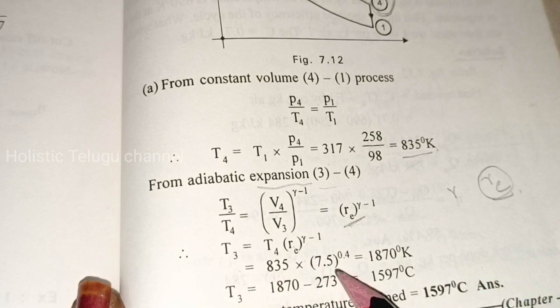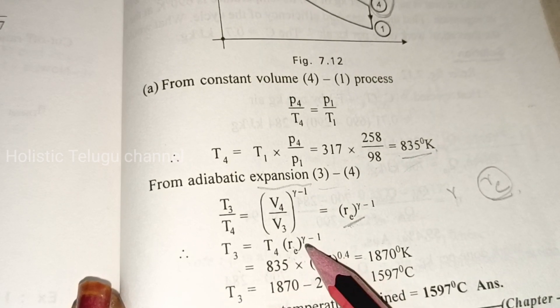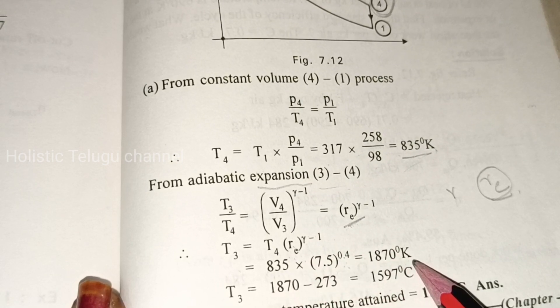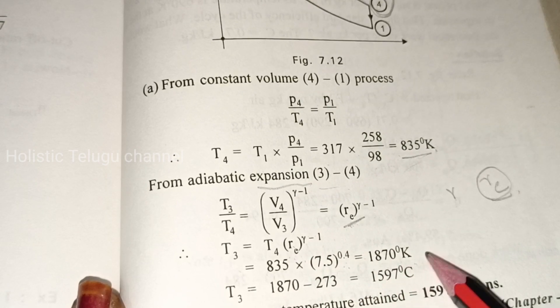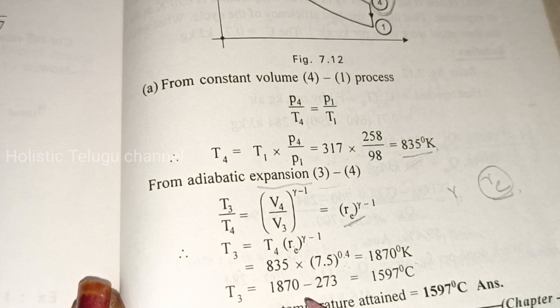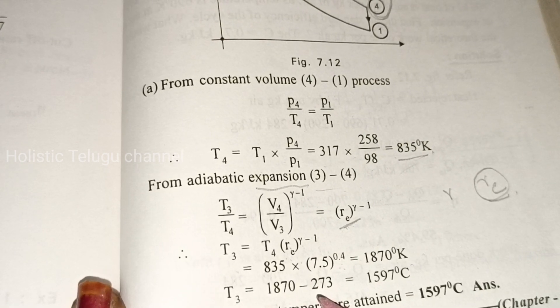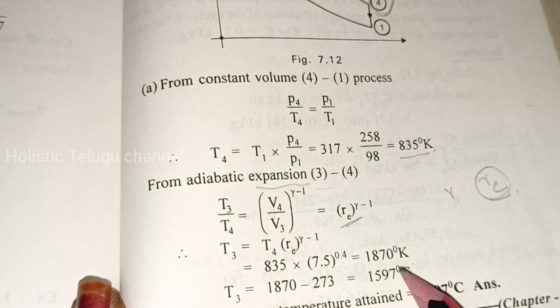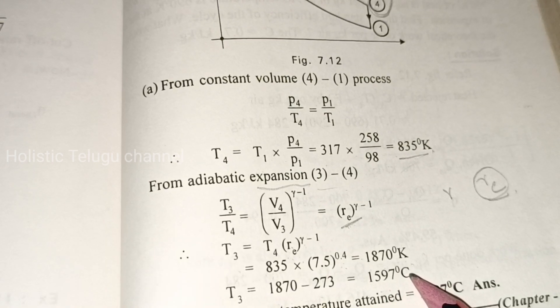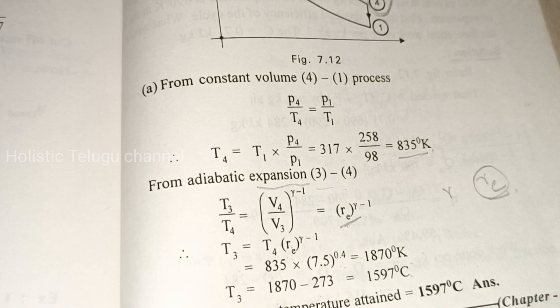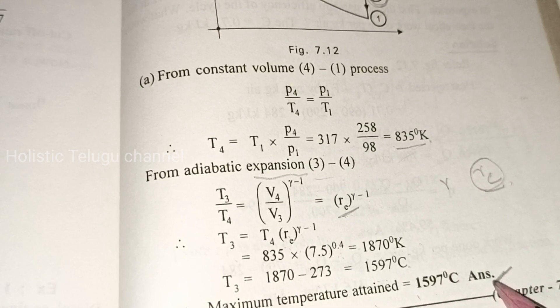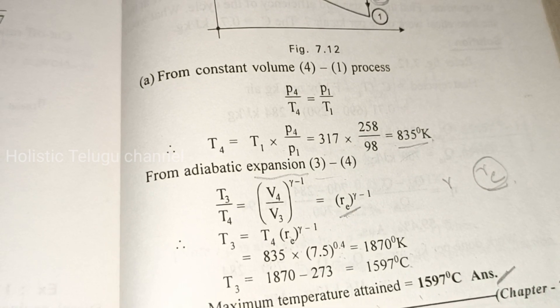From adiabatic expansion: T3/T4 = (V4/V3)^(γ-1) = (re)^(γ-1). So T3 = 835 × (7.5)^0.4 = 1870 K = 1870 - 273 = 1597°C. Maximum temperature attained is 1597°C.